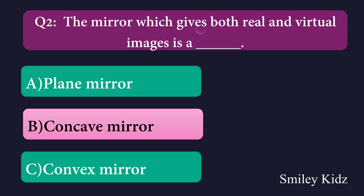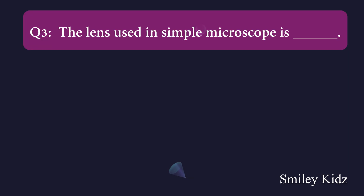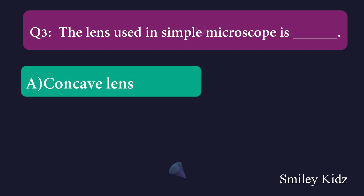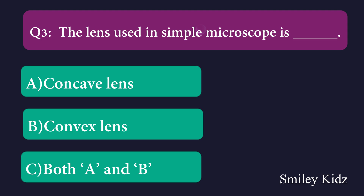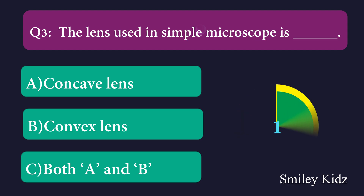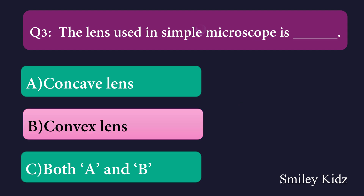Question number three: The lens used in a simple microscope is dash. Option A: concave lens, Option B: convex lens, Option C: both A and B. The right answer is convex lens. The lens used in a simple microscope is convex lens.